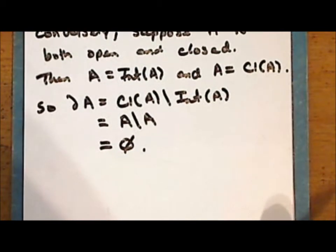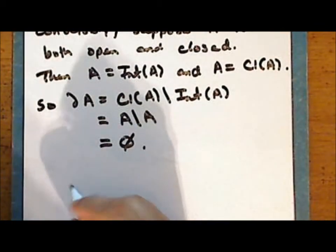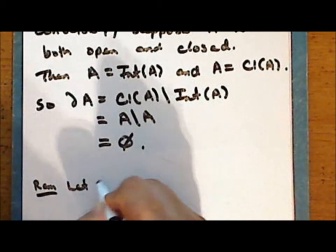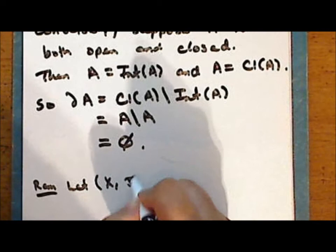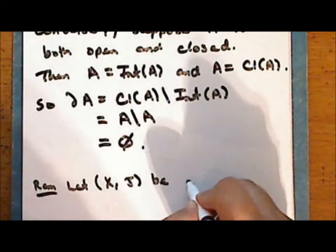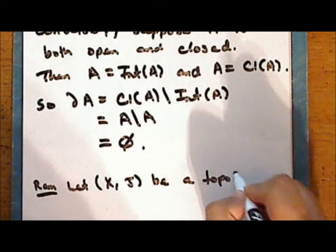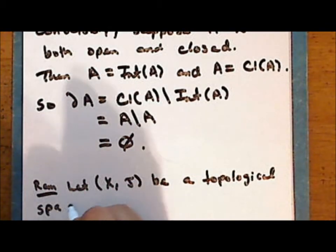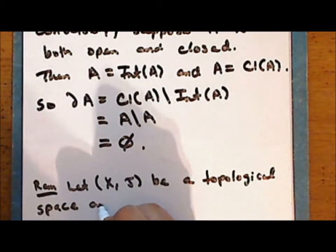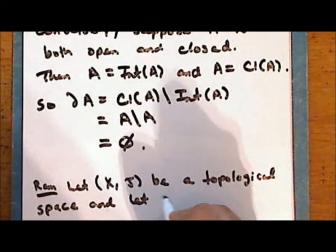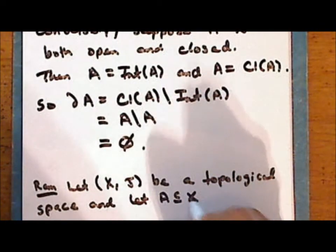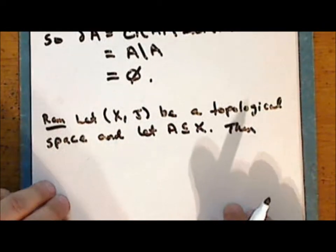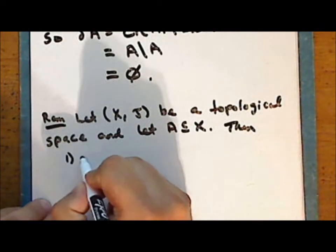So now we can consolidate some properties of the boundary. Let X together with some topology tau be a topological space, and let set A be a subset of the space X. Then we have three ways to compute the boundary.